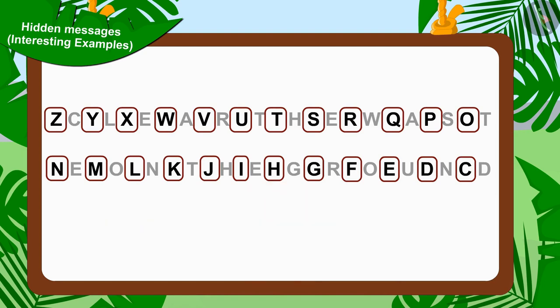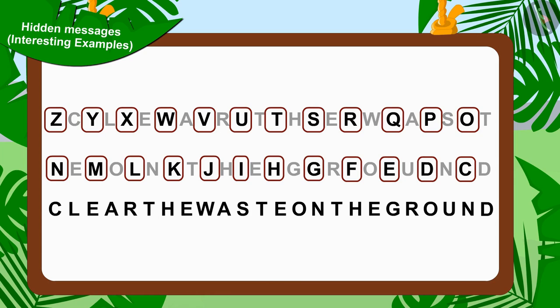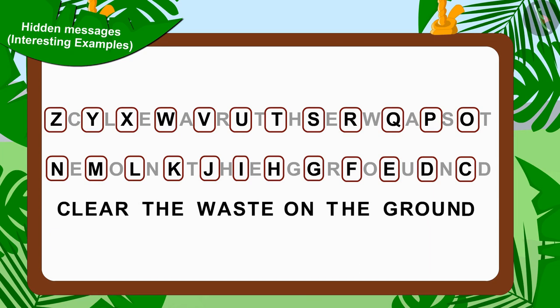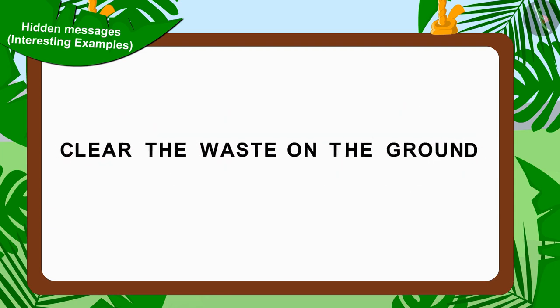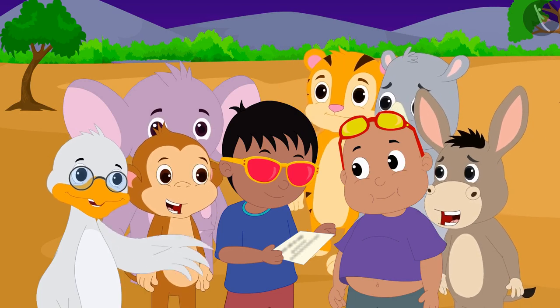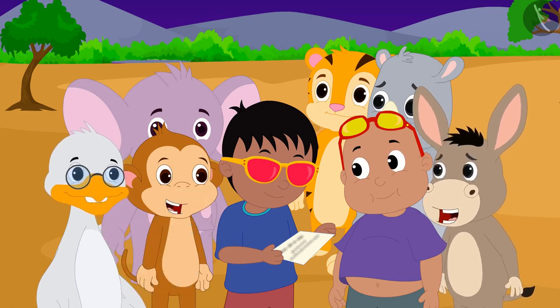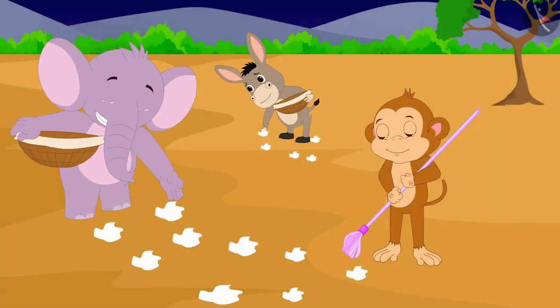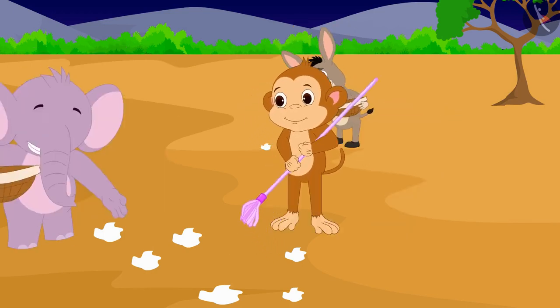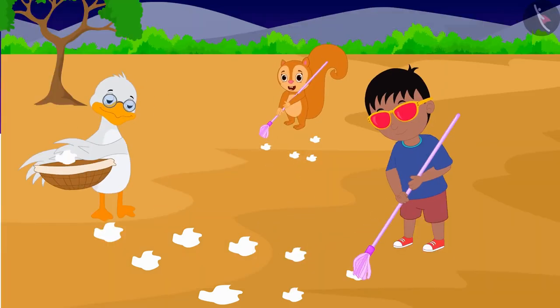No. Let us now write the remaining alphabets separately. Now do you understand Jeev's hidden message? Absolutely right. In this hidden message, it is written: 'Clear the waste on the ground.' Uncle 2, like you, quickly understood this hidden message and read it to the villagers. All the villagers together cleared the garbage scattered on the ground.